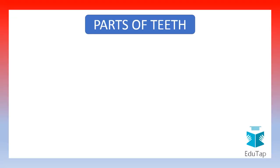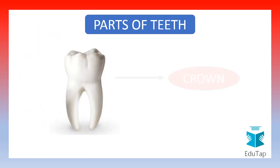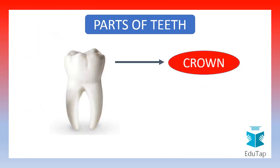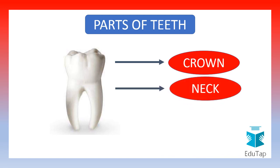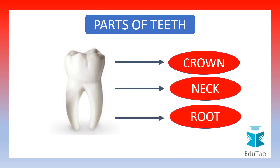Let us see what are the various parts of teeth. A tooth has an upper part called the crown, a middle part called the neck, and the lowermost part of the teeth is called the root.